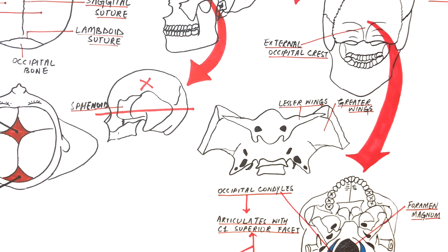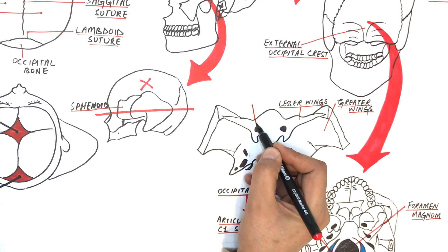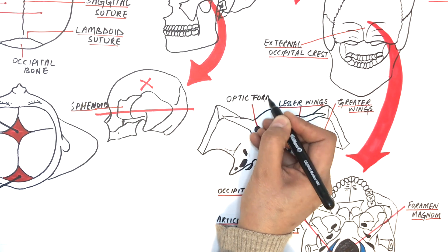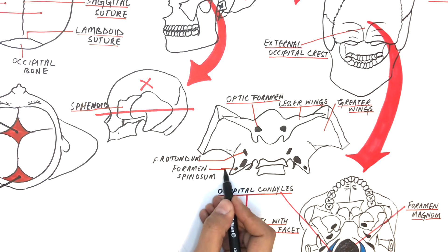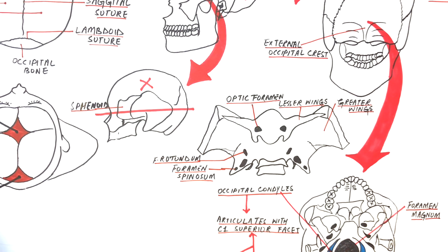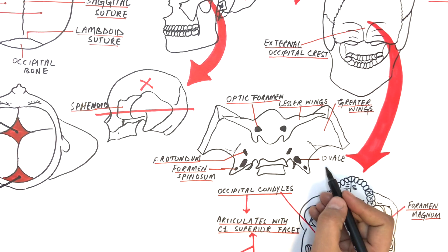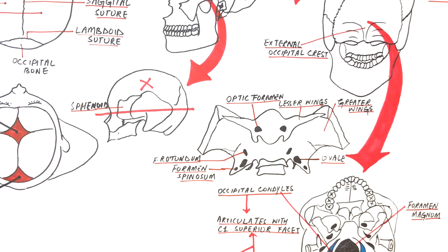This bone consists of some really important foramens. Foramens in the sphenoid bone are listed as the optic foramen, where the second cranial nerve or the optic nerve passes; the foramen spinosum, where the middle meningeal artery passes and gives blood supply to the meninges; foramen rotundum, through which passes the maxillary nerve and is the second branch of the trigeminal nerve; and finally foramen ovale, where passes the mandibular nerve and is the third branch of the trigeminal nerve.